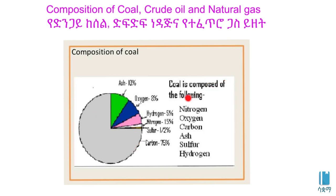Coal is composed of the following: nitrogen, oxygen, carbon, sulfur, and hydrogen.